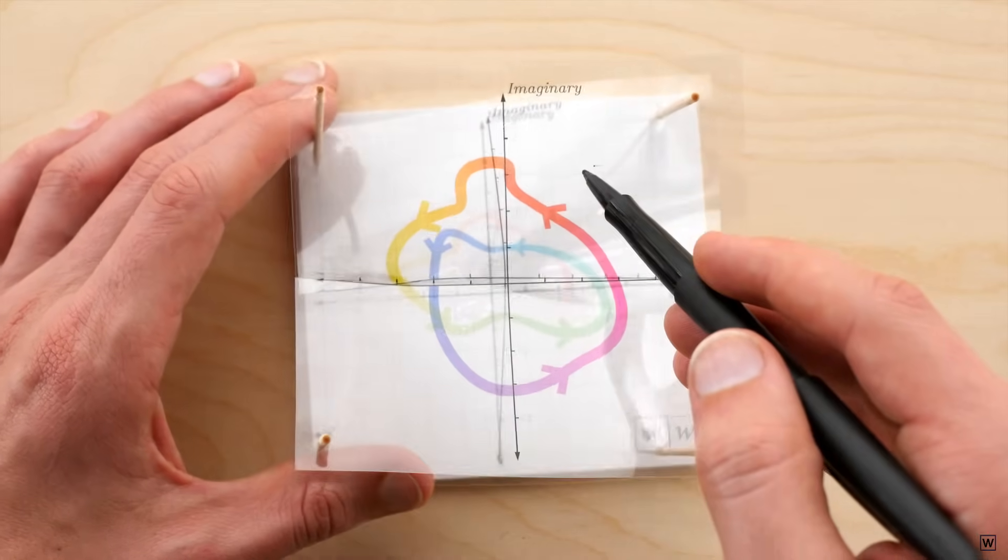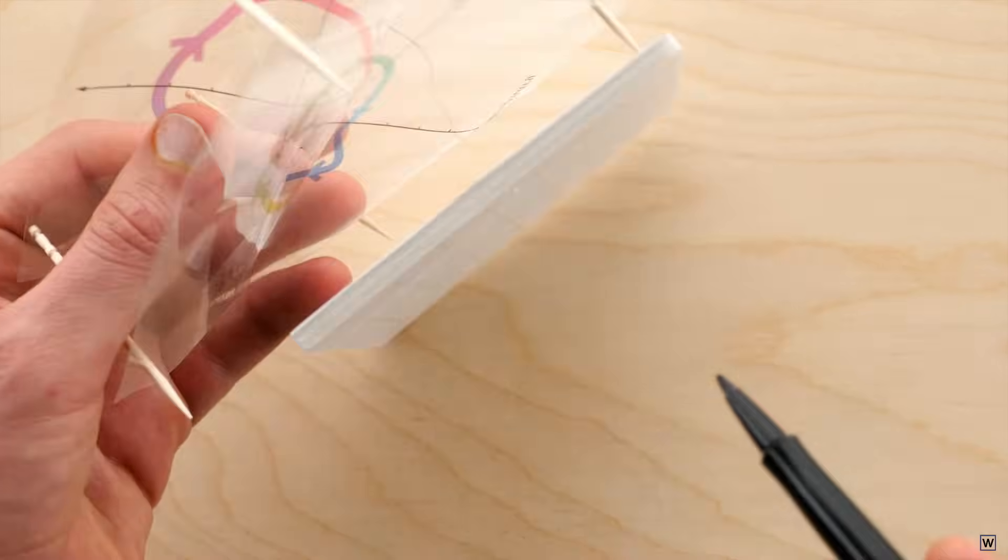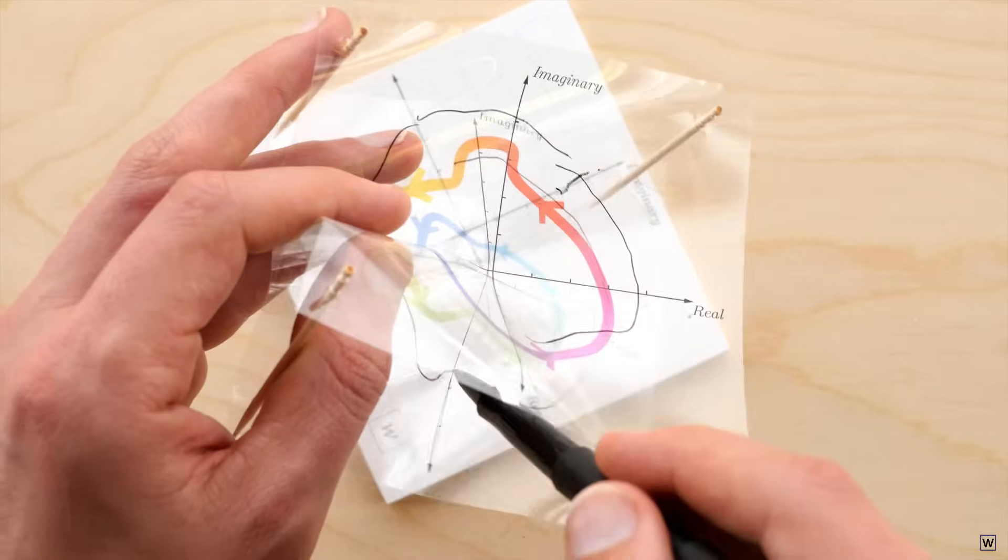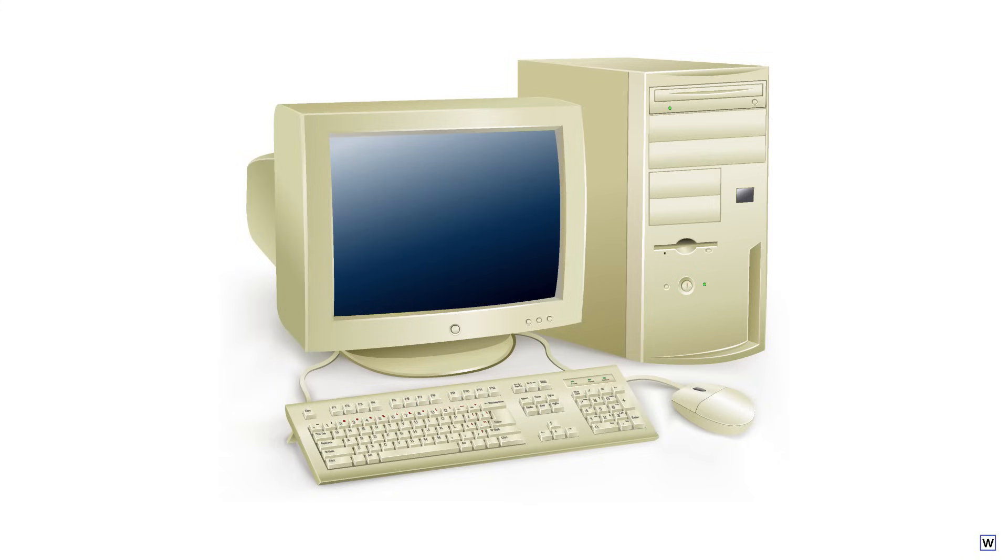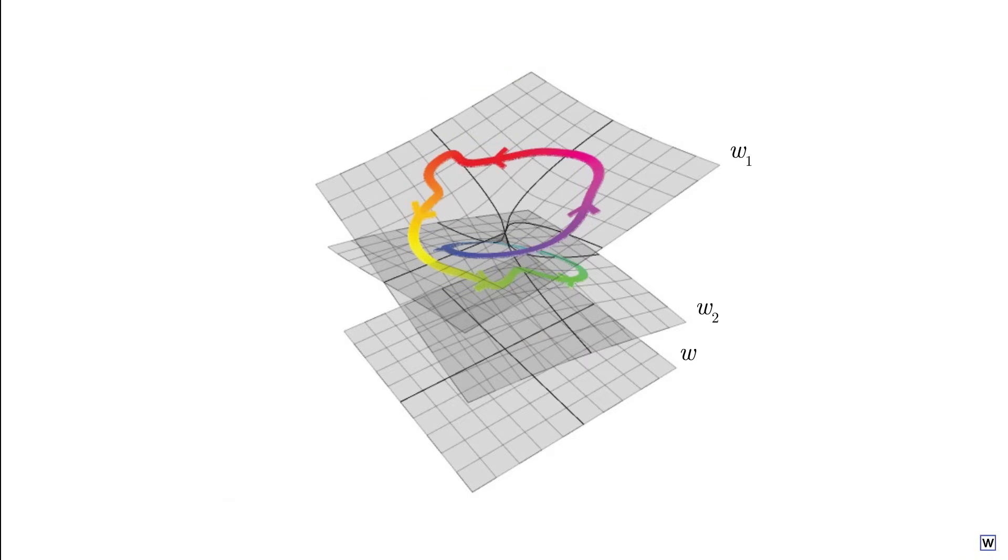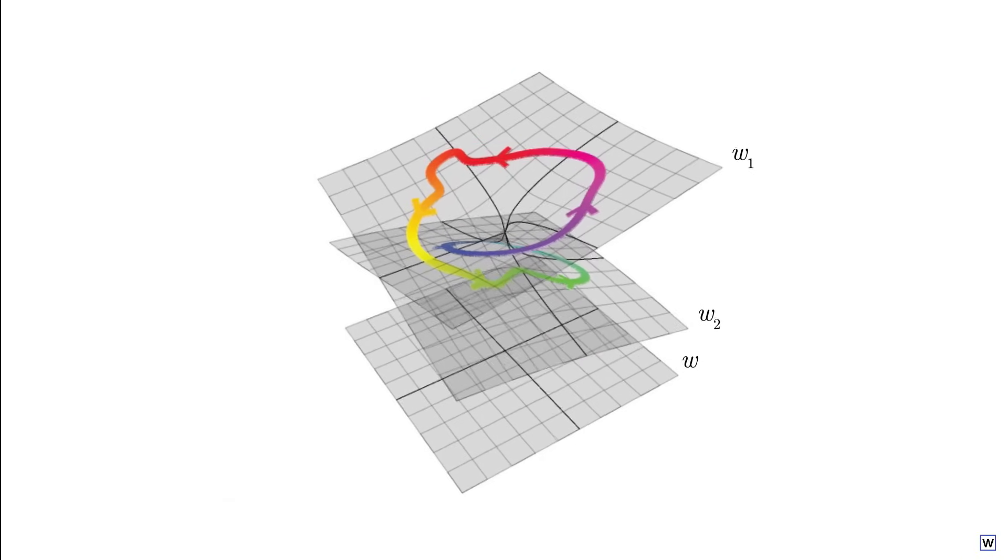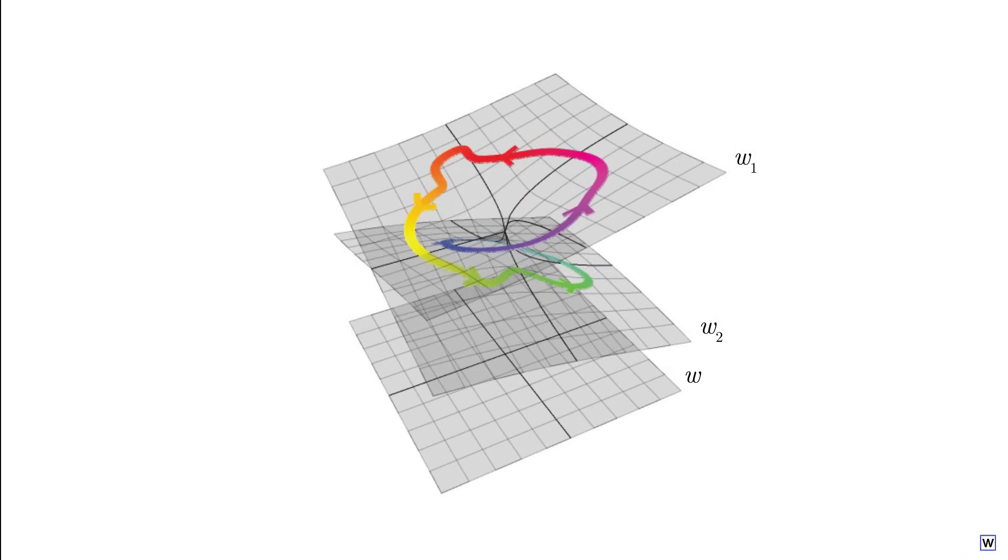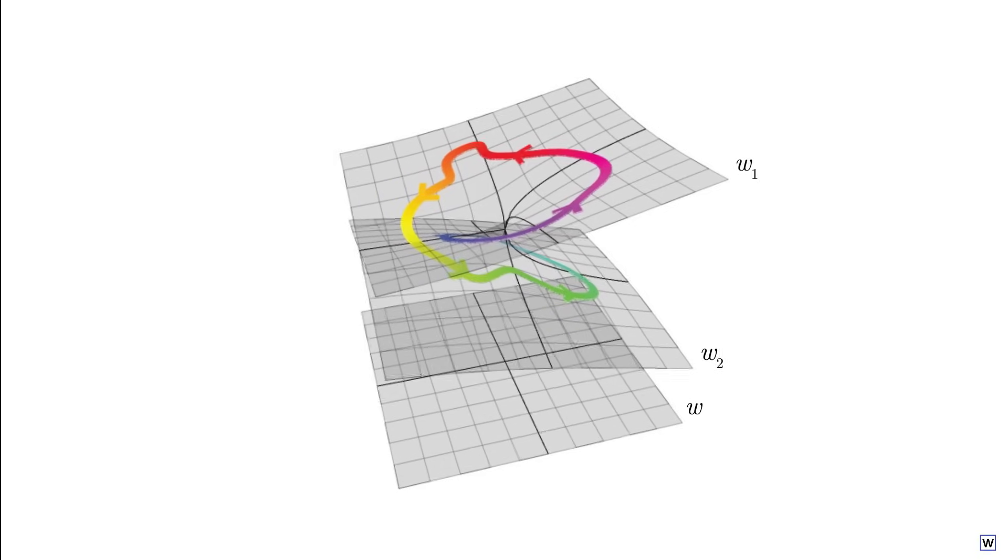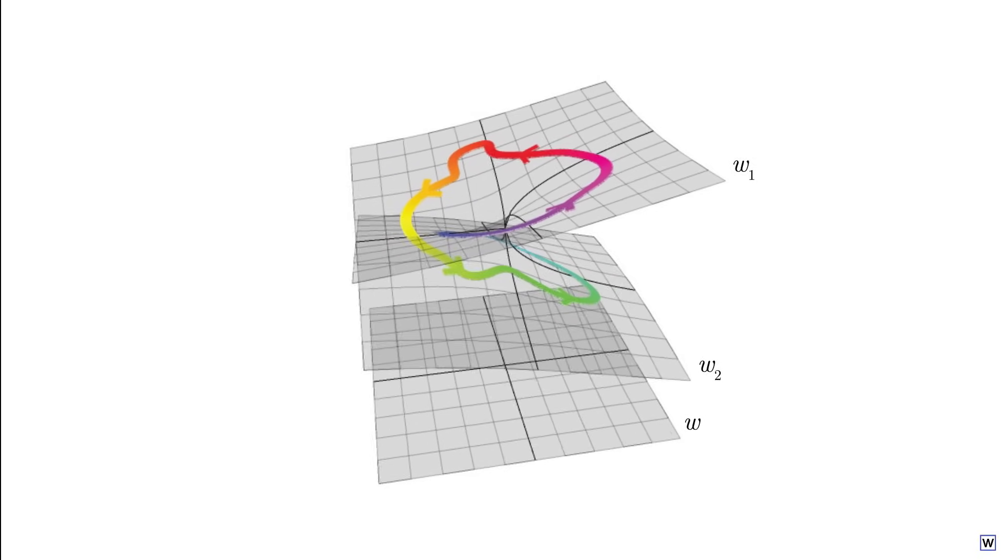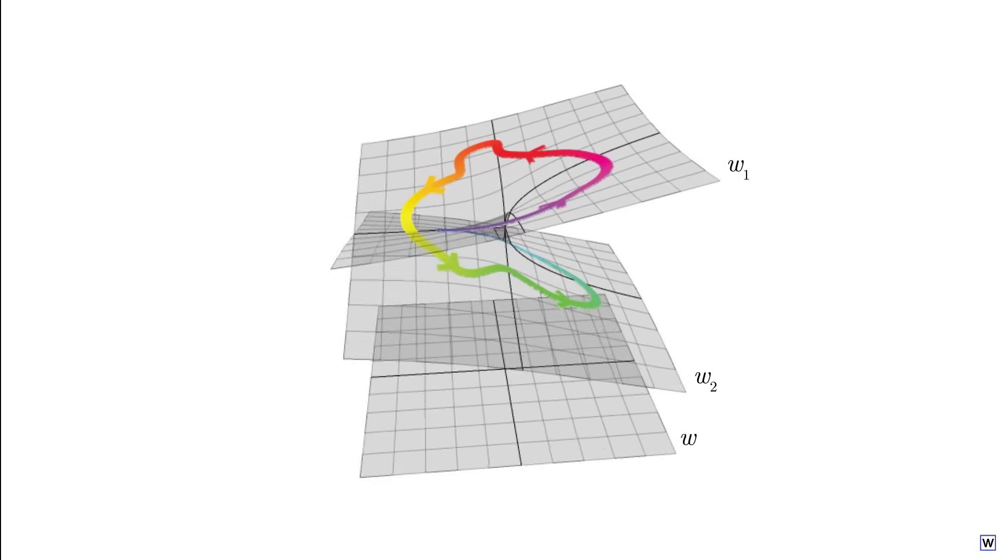Drawing on three-dimensional surfaces can be a little challenging. So we'll make use of a tool that wasn't invented until over a century after Riemann's death. A computer! Just as with our paper version, we'll start with our W plane line flat on the ground and place our Riemann surface directly above. Before we start drawing paths all over our surface, let's make sure we know what we're looking at.